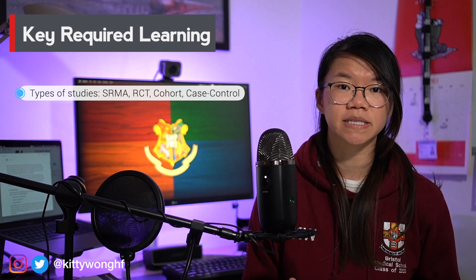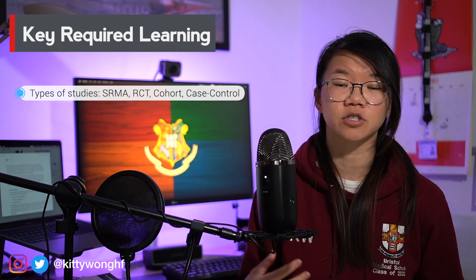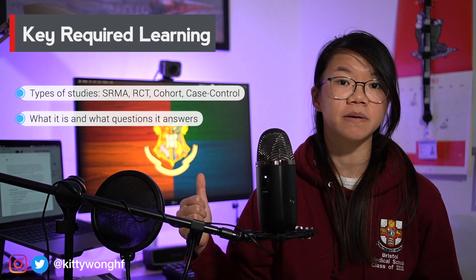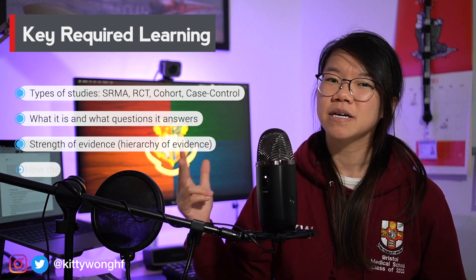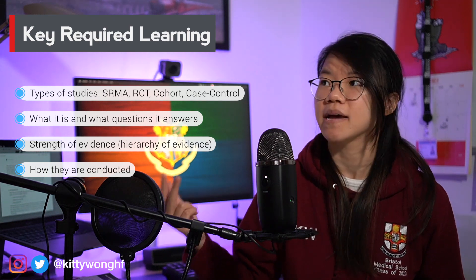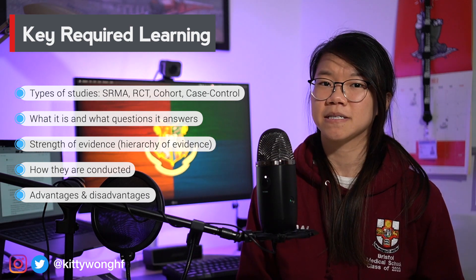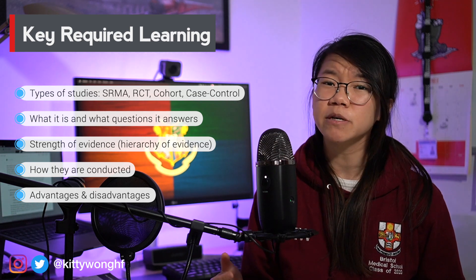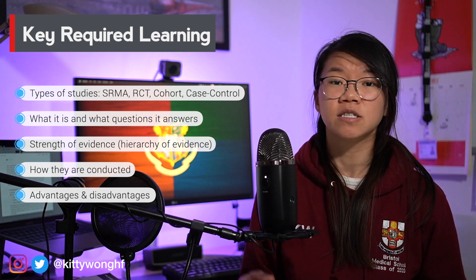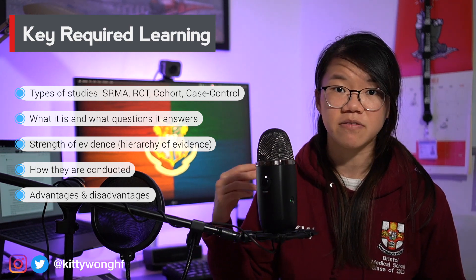Firstly, the types of studies. Whilst randomized control trials are really popular choices for AFP interviews, you also need to know about different types of non-randomized study designs and their characteristics. Common types that might come up include systematic reviews, randomized trials, cohort studies, case-control studies, and other types such as ecological studies and case series. For each type, you need to learn what it is, what types of questions it can answer, the strength of evidence it provides in the hierarchy of evidence, how they're conducted in a broad sense, and the advantages and disadvantages of each study design.